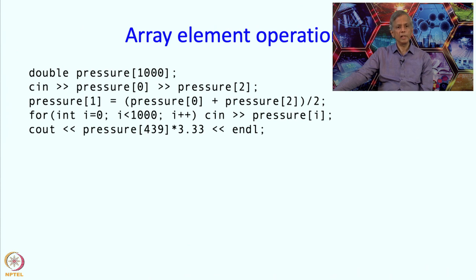I can print out the values as well and again I could have written something like p times 3.33 and for any variable I can put in any array element reference.